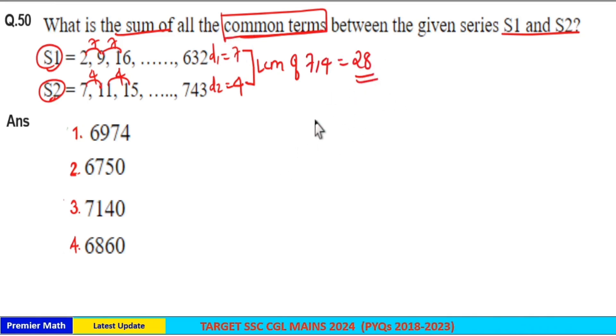Before applying this common difference, we have to find the first common term from S1 and S2. 15 plus 4 is 19, 19 plus 4 is 23. Here 16 plus 7 is 23. So the first common term is 23.